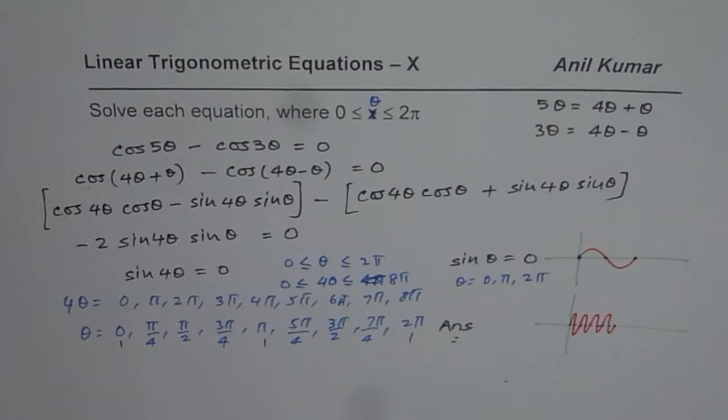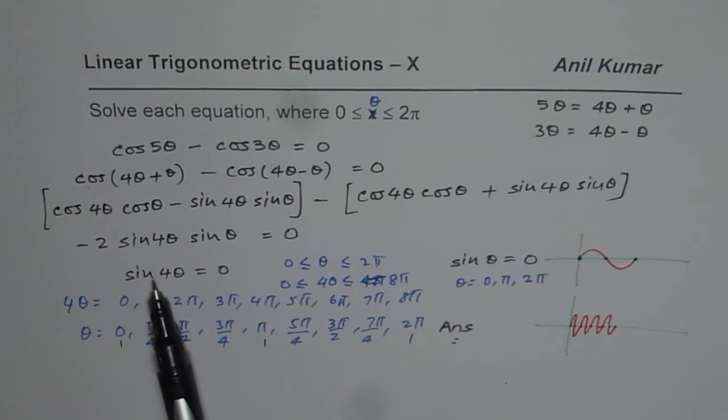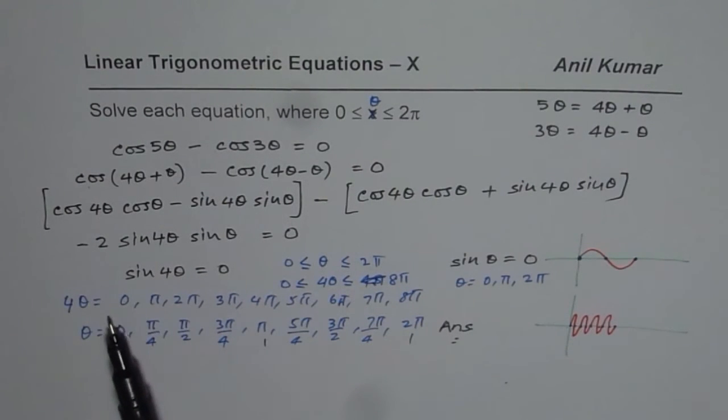You learned two things here. First, you could always use compound angle formulas to solve such equations. You would also use sum and difference form. Plus, whenever the argument is 4θ, you expect 4 times the answers within the interval 0 to 2π. I hope this point is well taken. Thank you and all the best.